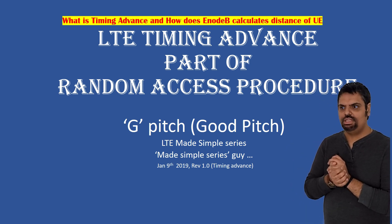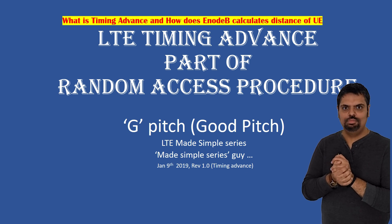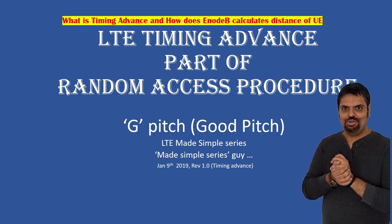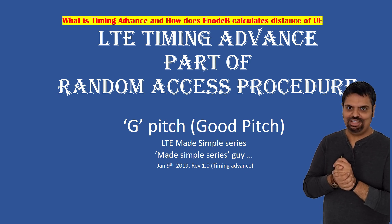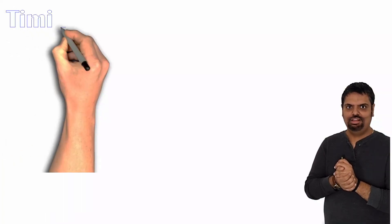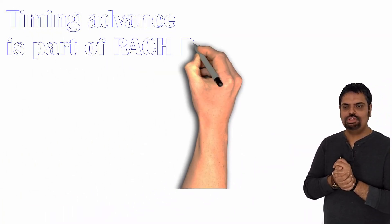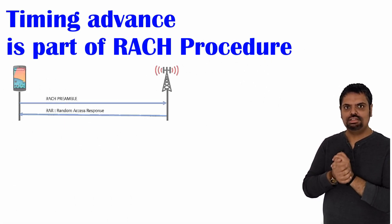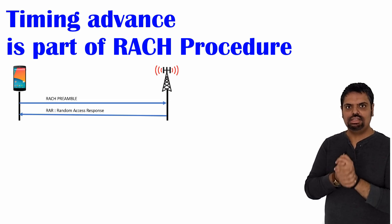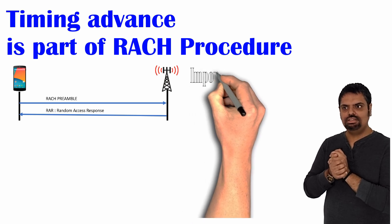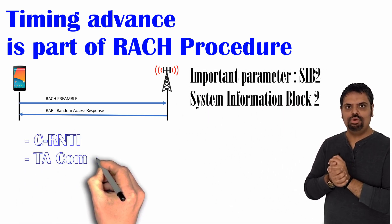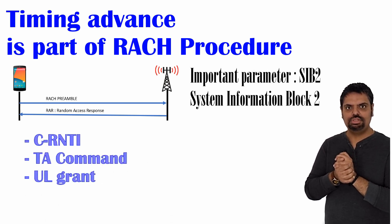Hello, namaste, salaam walaikum, hola, bonjour, ni hao, konnichiwa, annyeonghaseyo. In my previous video we saw how UE does the cell synchronization or the initial cell search by reading PSS, SSS, SIB1, and MIB. After it does the cell synchronization, it goes and reads SIB2, which contains important parameters for the random access procedure.